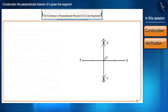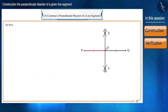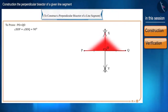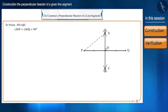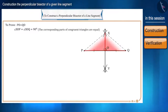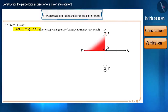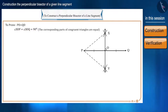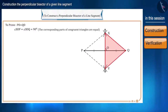Let's prove it mathematically as well. We will prove that PO is equal to OQ, and angle XOP is equal to angle XOQ, which equals 90 degrees. If we prove the triangles XOP and XOQ congruent, then since the corresponding parts of congruent triangles are equal, we can say that sides and angles are equal. For that, we will first take triangle XPY and triangle XQY by joining PX, PY, QX, and QY.